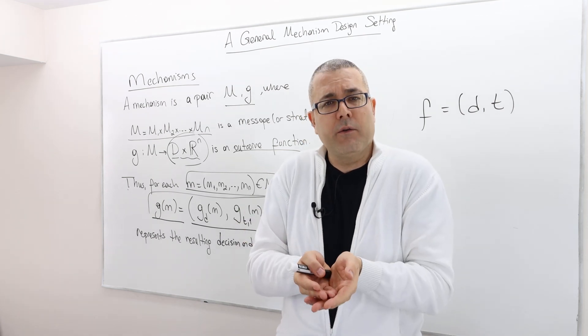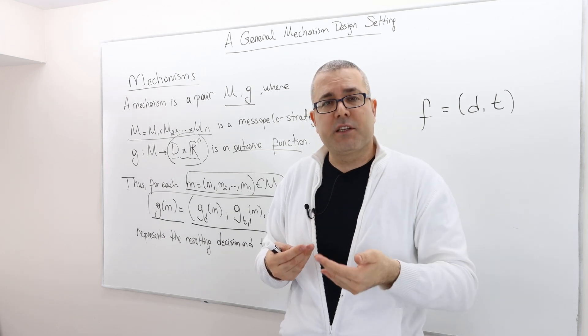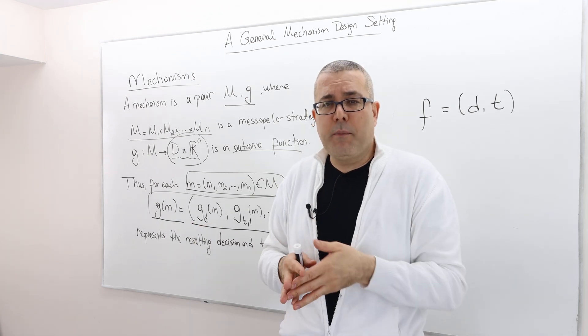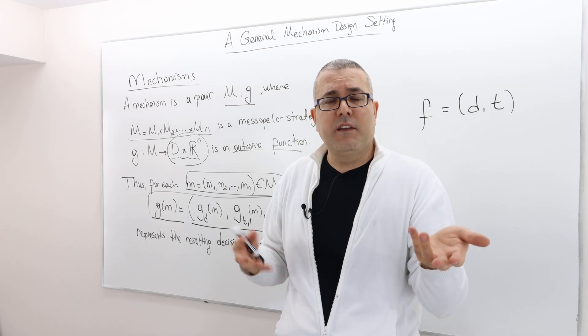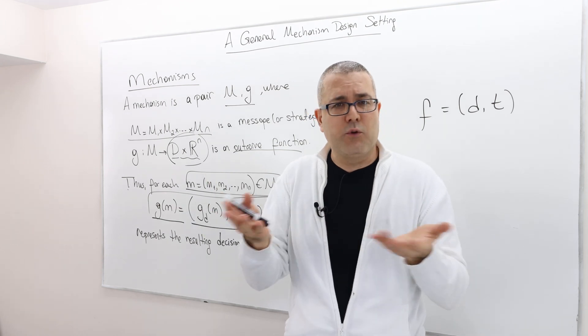The mechanism asks people, the bidders, what is your bid? You know, how much money would you like to pay? This can be higher or lower than your true valuation. Well, it's not optimal to bid higher than your true valuation.